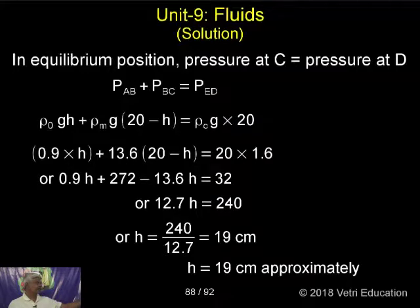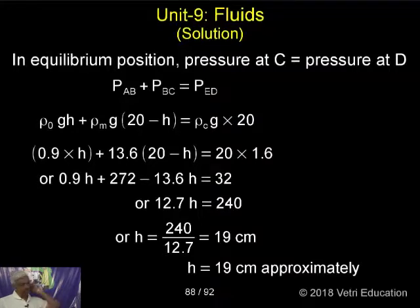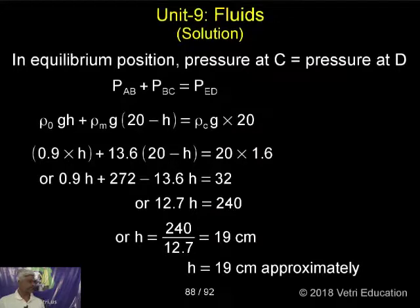The first term is rho_oil times g, then rho_mercury, then rho_carbon (CCl4). Substituting the values, H can be calculated. The result is H equal to 9 cm.